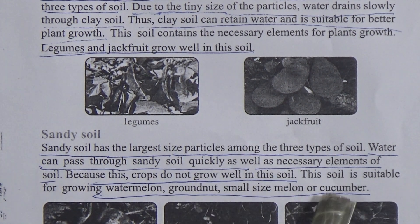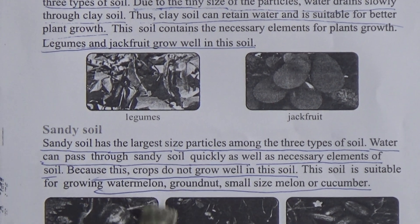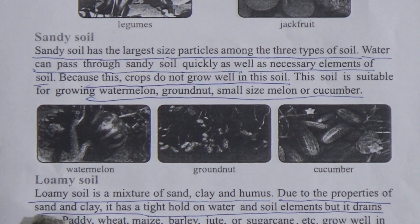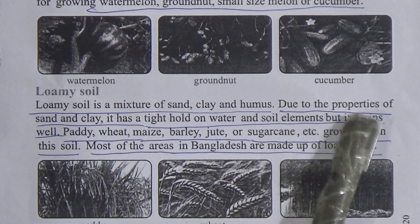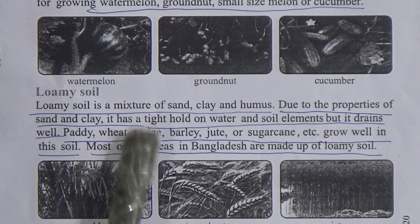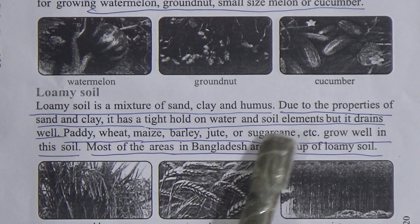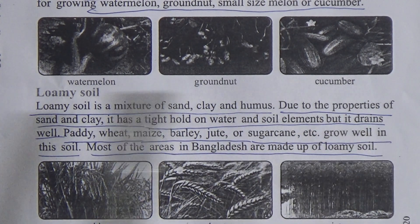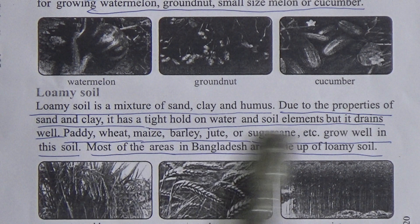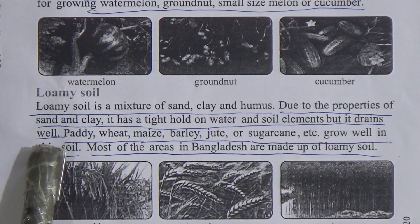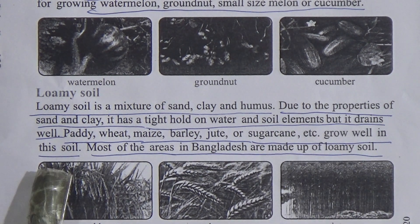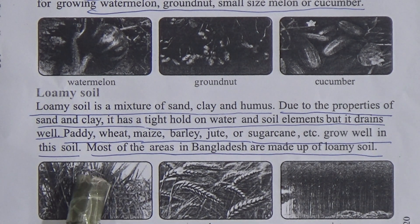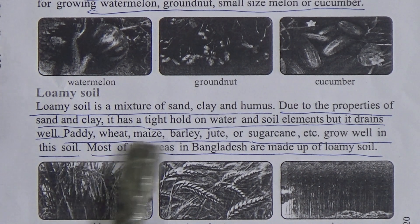Sandy soil is suitable for growing watermelon, groundnut, small melon, or cucumber. Underline and memorize this line. Now, loamy soil is a mixture of sand, clay, and humus. Due to the properties of sand and clay, it has a tight hold on water and soil elements, but it drains well.